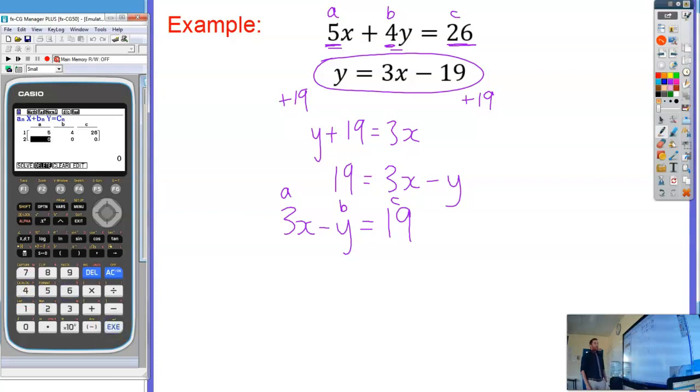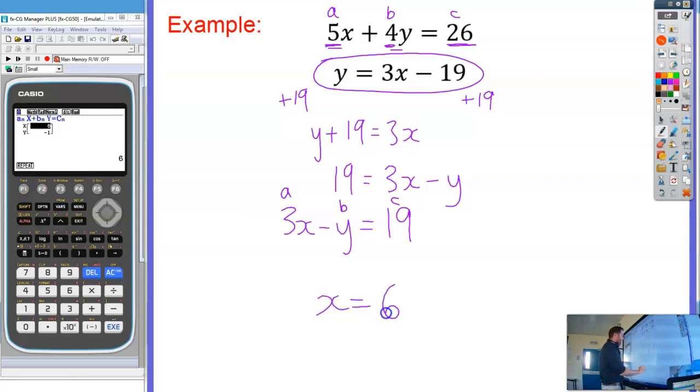That second one, A is 3, and then this minus Y means that B is going to be negative 1, negative 1 there. And finally C is 19. Press execute and then I'm going to press F1 solve. And there we go. We get X equals 6 and Y equals negative 1, and that's the solution to that pair of simultaneous equations. That is where these two lines intersect.